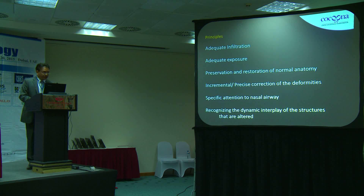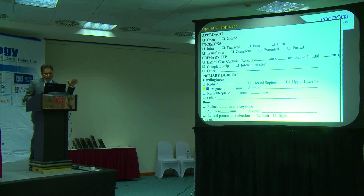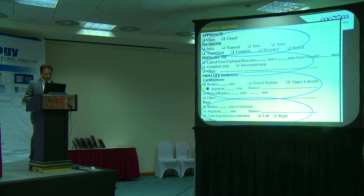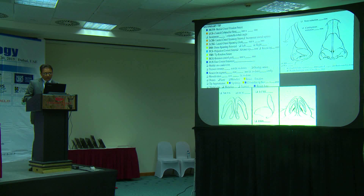The principles of surgery include tumescent infiltration to achieve an avascular field, adequate exposure through open-tip rhinoplasty, and preservation and restoration of normal anatomy at the end of surgery, which is the key. Incremental and precise correction of deformities ensures we do not overcorrect problems, with specific attention to the nasal airway. We prefer the open approach; the closed approach has very limited indications. We move to the primary tip assessment first, then the dorsum, understanding the cartilaginous and bony components. We often work with an ENT colleague for septum or turbinate work, and perform septoplasty for graft harvesting and osteotomy.